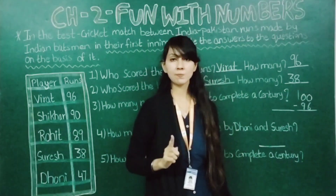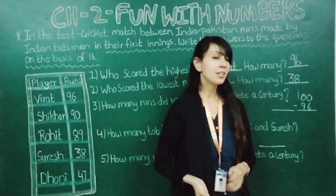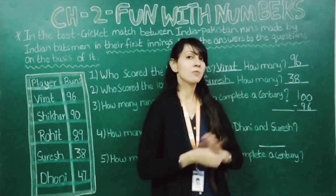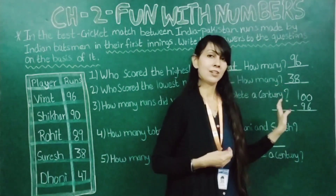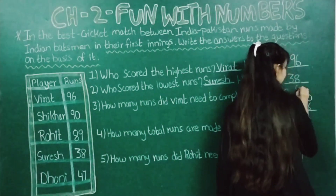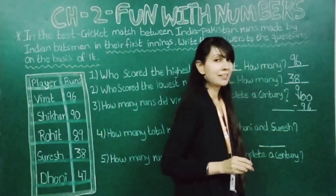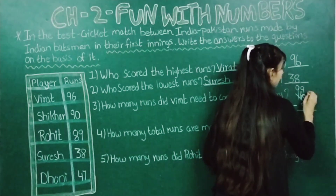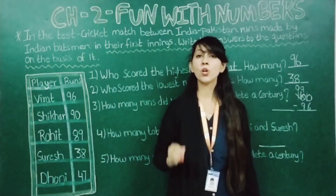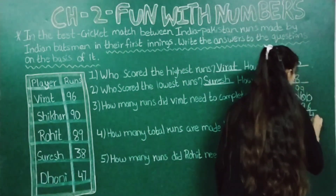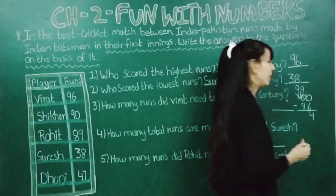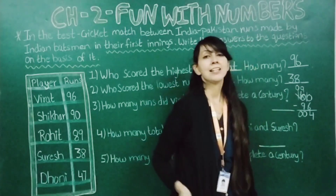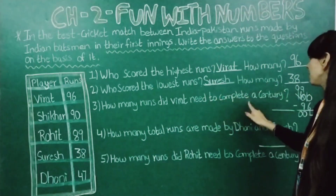Now in the ones place, 0 is there, so 6 will not go from 0. In the tens place also 0 is there, so 9 will not go from 0. We will borrow from the 1 in the hundreds place — cut 1, make it 0, this becomes 10. Then cut the 10 in the tens place, make it 9, and ones place becomes 10. Now 10 minus 6 gives 4. So you can say 4 runs Virat needs to complete a century.